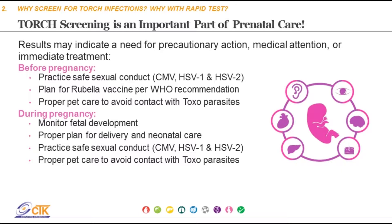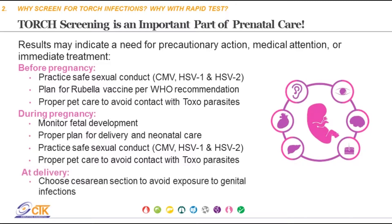Determining that a pregnant woman is negative for TORCH infection allows her to minimize exposure and reduce the risk of acquiring a primary infection during pregnancy. Determining if there is a current or past infection highlights the importance of monitoring the developing fetus. For example, if a pregnant woman has an active herpes infection during pregnancy, plans can be made for a safe delivery.